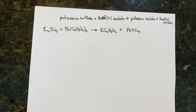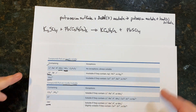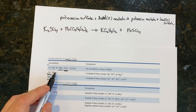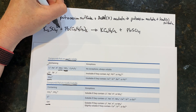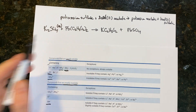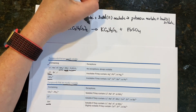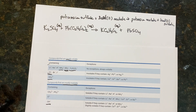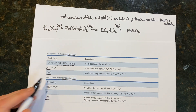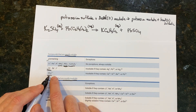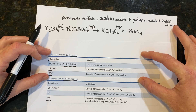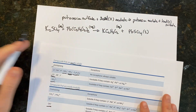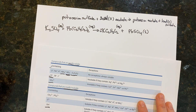Is there a reaction? Let's check each compound. Potassium has no exceptions — always soluble, so K₂SO₄ is aqueous. Lead(II) acetate: acetate is always soluble, so that's aqueous. Potassium acetate: potassium and acetate together are definitely aqueous. Lead(II) sulfate: sulfate is normally soluble, but lead is one of the insoluble exceptions — so lead(II) sulfate would be a solid.